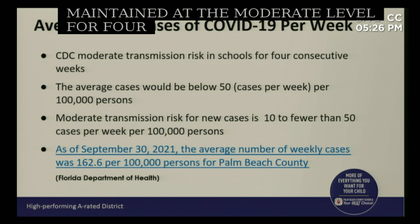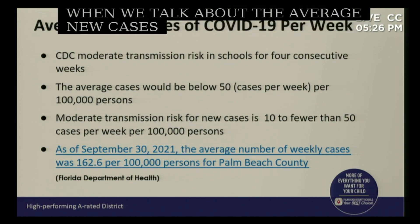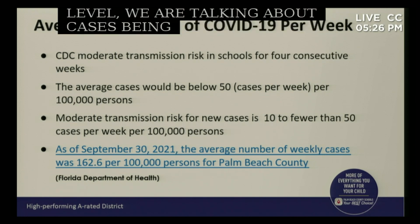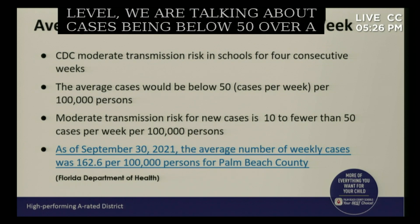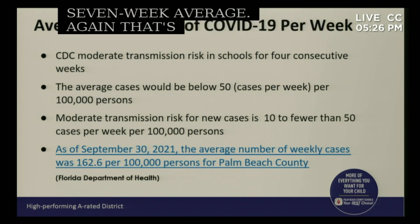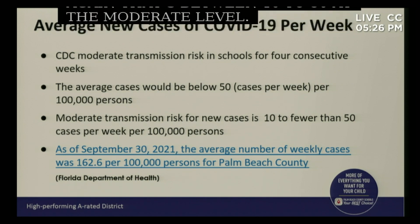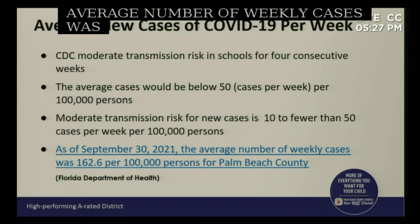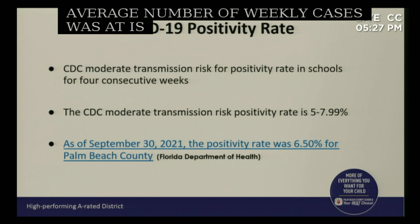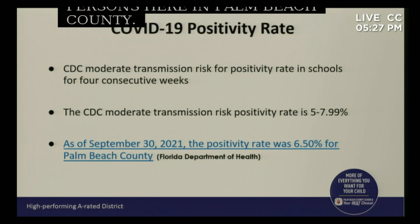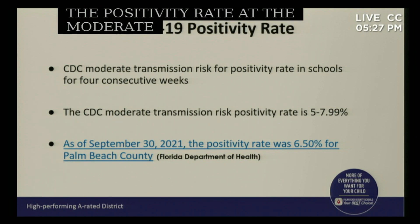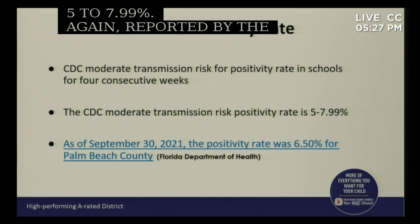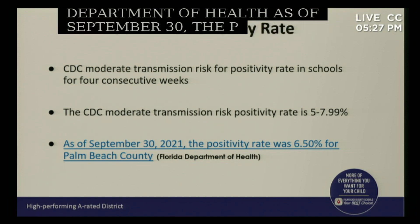Both of those two indicators would need to be maintained at the moderate level for four weeks. At the moderate level, we're talking about cases being below 50 — that's between 10 and 50 — over a seven-day average. As of September 30th, as reported by the Florida Department of Health, the average number of weekly cases was at 162 per 100,000 persons here in Palm Beach County. The positivity rate at moderate transmission risk is 5 to 7.99 percent; as of September 30th the positivity rate was 6.5 percent for Palm Beach County.